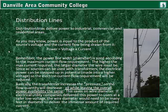Distribution lines deliver power to industrial, commercial, and residential areas. Power is equal to the product of the source's voltage — that is, its electrical pressure — and the current flow being drawn from it. So power equals voltage times current. The power line width, or diameter, is sized according to the maximum current flow requirement. The higher the maximum current required, the larger diameter the wire must be.